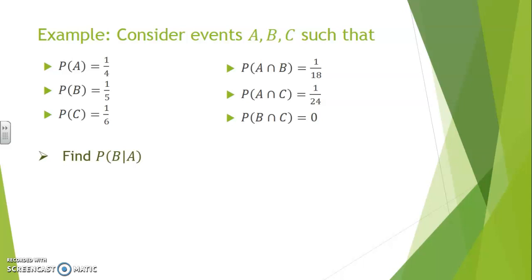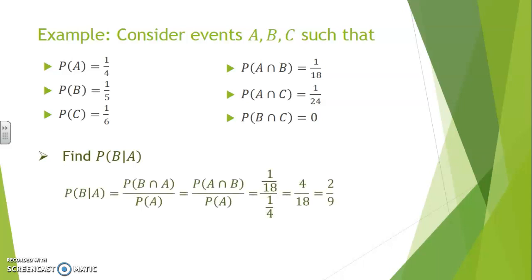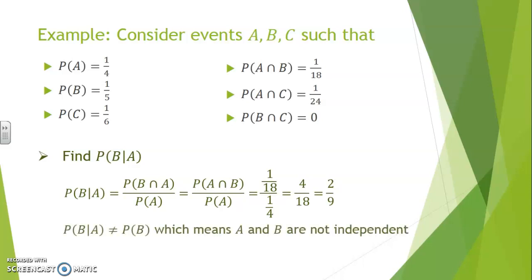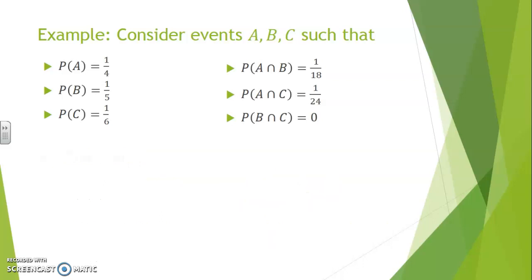If we look to find P of B knowing A, following our definition, we find the ratio of P of B's intersection with A over P of A. The probability of A intersection with B is 1/18, and the probability of A is 1/4, giving us 2/9 as a result. Notice how P of B knowing A, which is 2/9, is not equal to P of B, which is 1/5. This means that A and B are not independent — A has an effect on the probability of B occurring. We would also have checked that their intersection is not equal to the product of their individual probabilities.